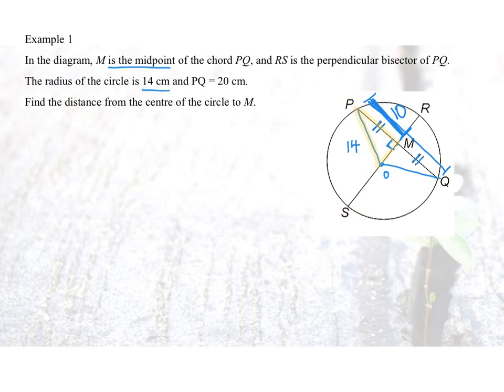That means what's the length of P to M? PM will now be 10cm. They ask us to find the distance from the center of the circle to M. That means you need to find OM. What triangle do you see? Do you see P, M, O, the right-angled triangle?